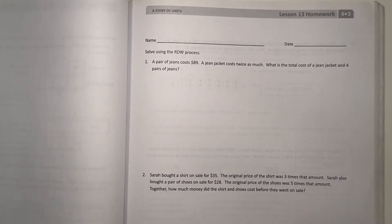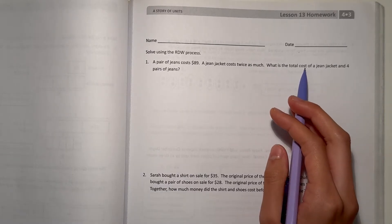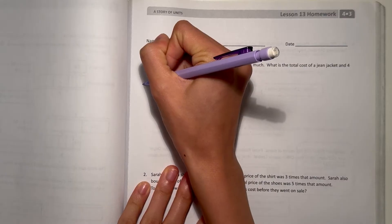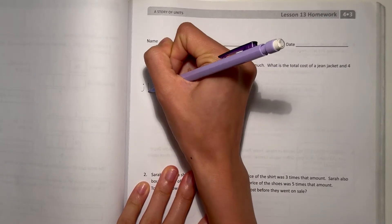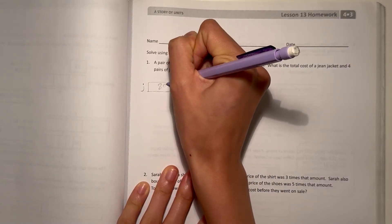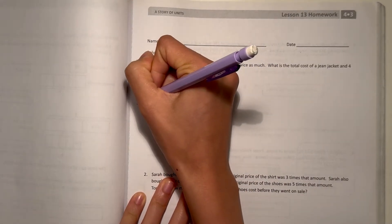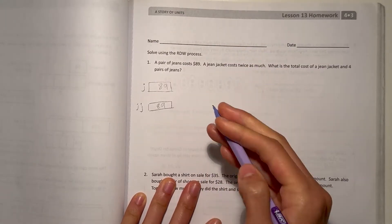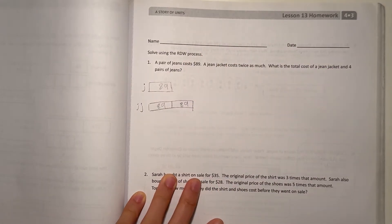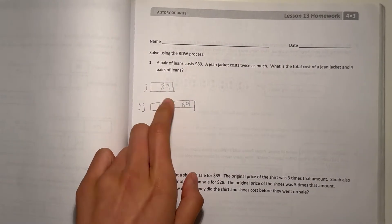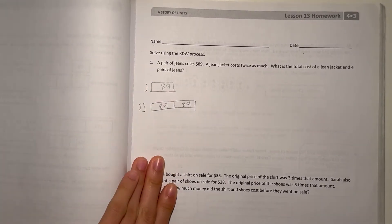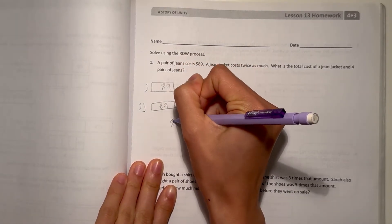So number one, we have a pair of jeans costs $89. A jean jacket costs twice as much. What is the total cost of a jean jacket and four pairs of jeans? Let's draw a tape diagram. So let's label J for jeans. A pair of jeans costs $89. But a jean jacket, you can label it JJ for jean jacket, costs $89. But it says twice as much. So it's $89 two times.